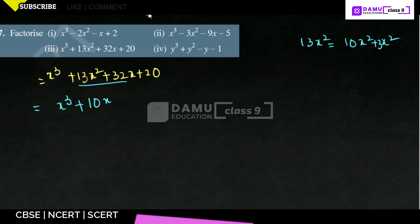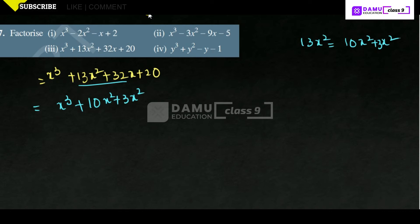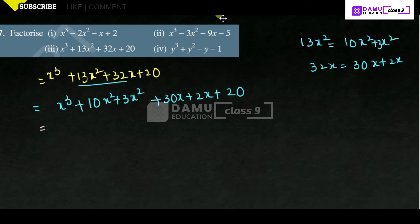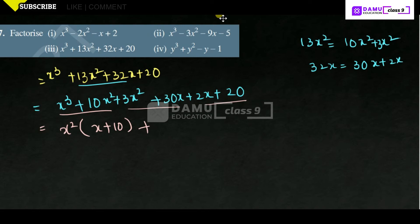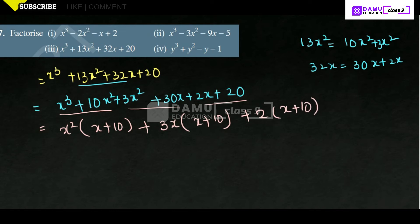So we have 10x² + 3x² + 30x + 2x + 20. Now grouping: from x³ + 10x², take x² as common giving x²(x + 10). Then from 3x² + 30x, take 3x as common giving 3x(x + 10). Then from 2x + 20, take 2 as common. x + 10 is common in all three groups.